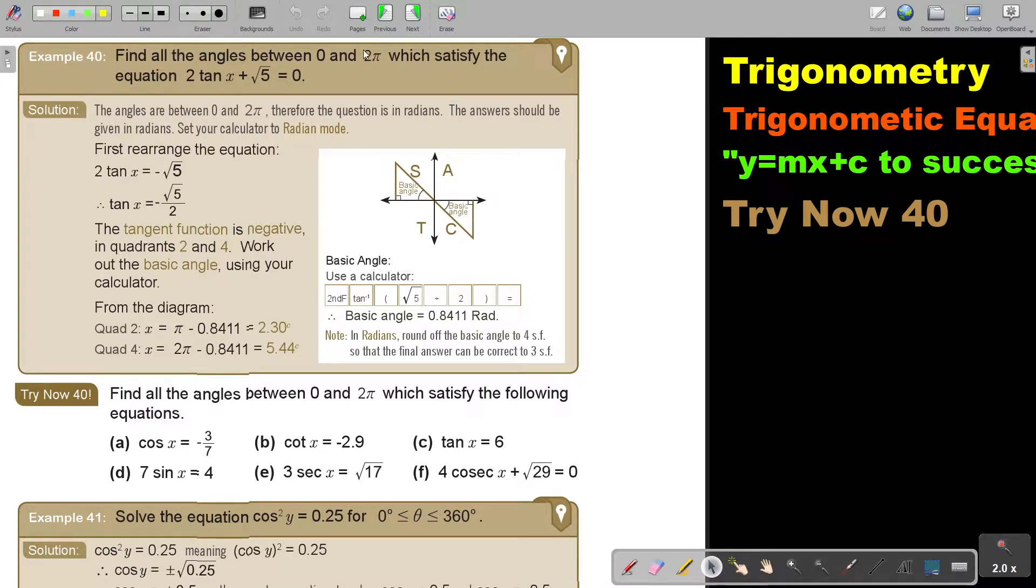Stop there. As soon as you see 0 to 2π, then before you even start with the question, put your calculator on radian mode. My Casio works like this: you press mode, mode, and then I choose 2. Figure it out on your calculator. The angles are between 0 and 2π, therefore the question is in radians. The answer should also be given in radians. Set your calculator to radian mode.